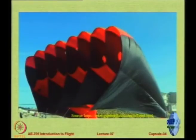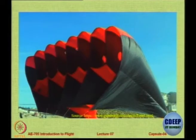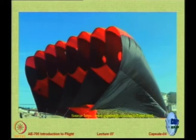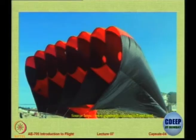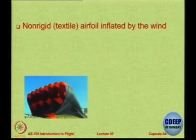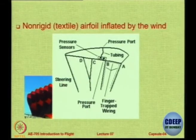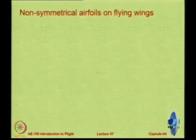Moving on to parafoils — aerofoils that get inflated with air, used for ram-air parachutes. They have a cut in the front and a proper shape at the back, typically around 18 percent thick. As ambient wind enters, the pockets fill up and the structure acquires a parafoil shape. This is a non-rigid textile aerofoil that is wind-inflated.